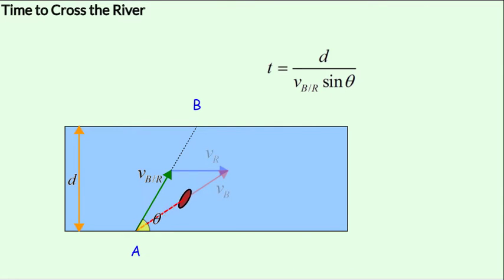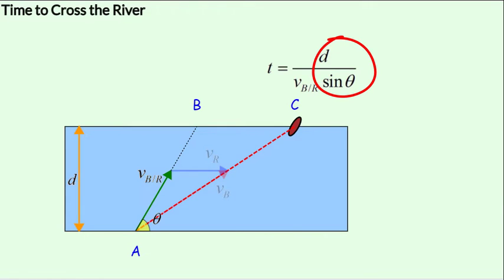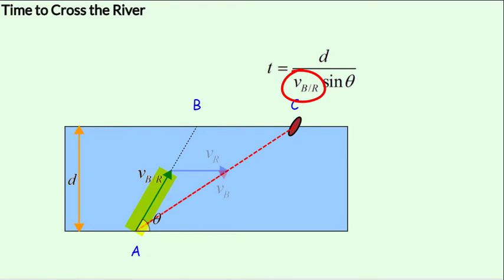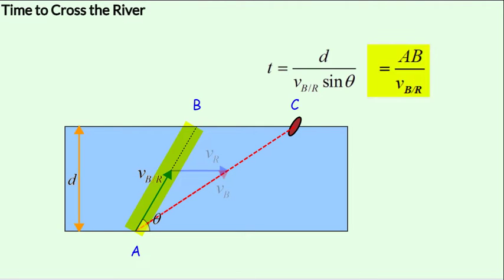Here is the simplified figure once again. We head out in the direction A to B, and due to the river current we reach C. If you observe the formula closely, the distance d over sinθ represents the distance AB. So the time can also be obtained by dividing the length AB by the velocity of the boat with respect to the river along our intended direction. The time can be found either using distance d with velocity vb_r·sinθ, or using the intended direction distance d/sinθ with velocity vb_r.